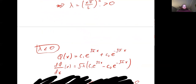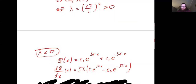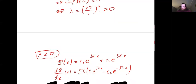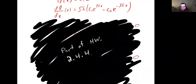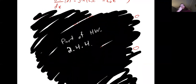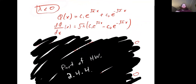The third case is λ < 0. We can write the solution φ as a linear combination of real exponentials. We can take the derivative and do a similar analysis — bringing in the boundary conditions to see what they tell us about c₁ and c₂, and whether a non-trivial solution exists. This is part of the homework assignment: it's a straightforward verification that we cannot have λ negative for this eigenvalue problem.